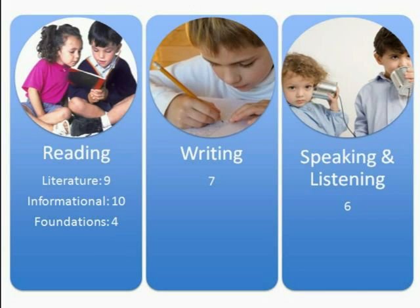One of the first things we need to understand is the overarching design of the Common Core Standards in general, and more specifically for Grade 1. The standards are divided into four basic sections: reading, writing, speaking, listening, and language. The reading section is further divided into three strands: one for literature with nine standards, one for informational text with ten standards in grade 1, and a foundational strand with four standards.